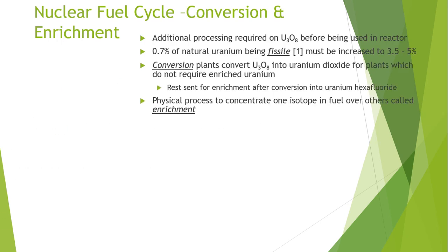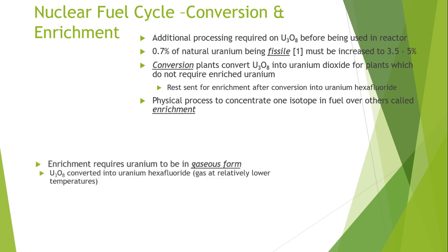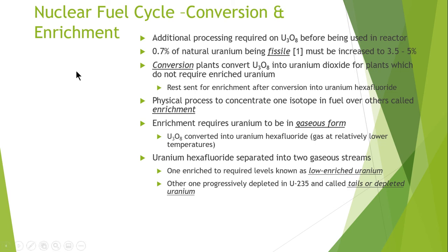Now let's see the details of the nuclear fuel cycle conversion and enrichment process. Additional processing is required before the uranium oxide is fed to the reactor. 0.7% of natural uranium being fissile must be increased to 3.5 to 5%. Conversion plants convert the uranium oxide U3O8 into uranium dioxide UO2 for plants which do not require enriched uranium. The rest is sent for enrichment after conversion into uranium hexafluoride (UF6).